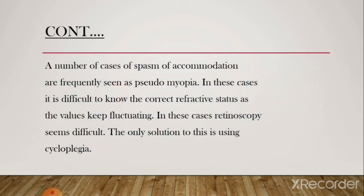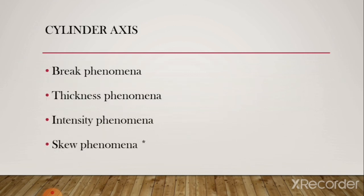Spasm of accommodation is frequently seen as pseudomyopia. In pseudomyopia, retinoscopy results keep fluctuating due to the accommodation spasm. The main solution is to use cycloplegic drugs — cyclopentolate or atropine — to paralyze the ciliary muscle, allowing you to easily neutralize the patient's refractive error. Without cycloplegia, you cannot neutralize pseudomyopia because of the variation in the neutral reflex.